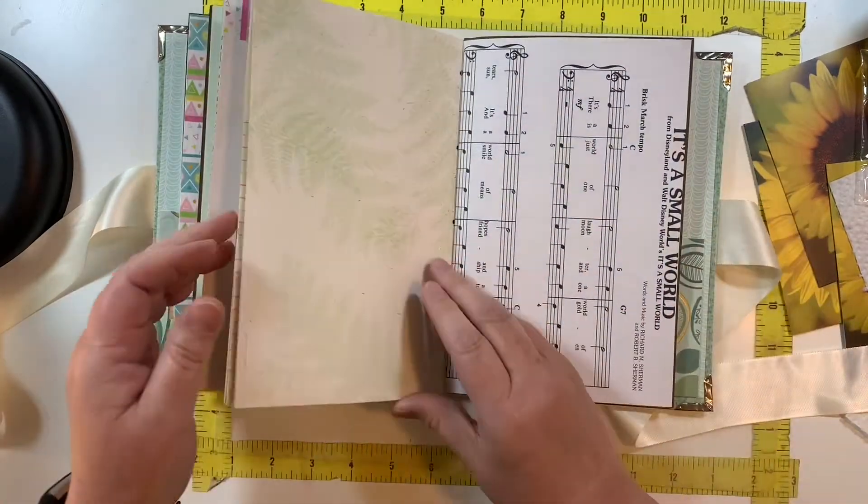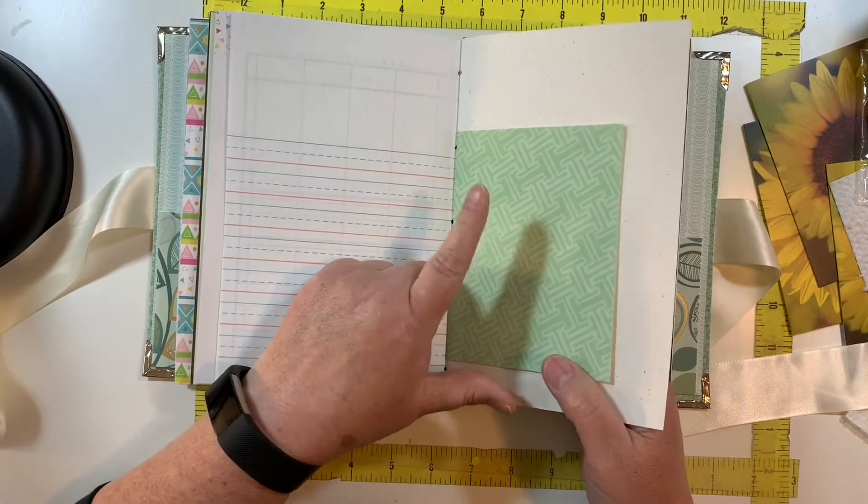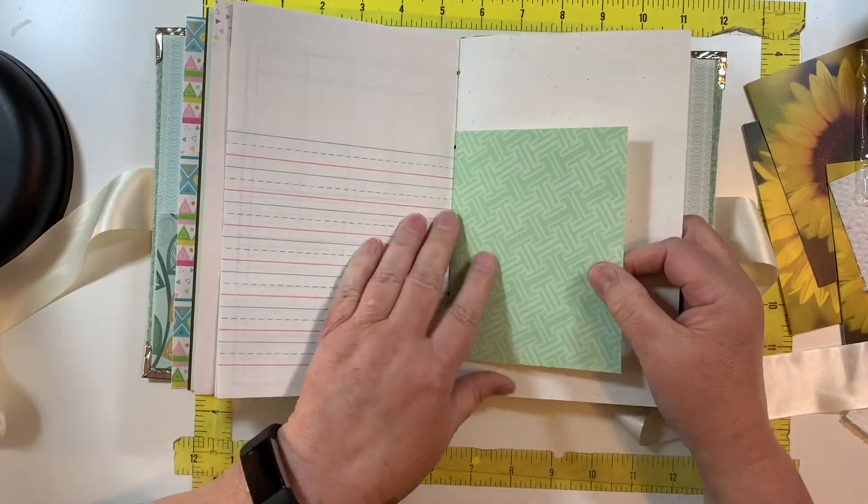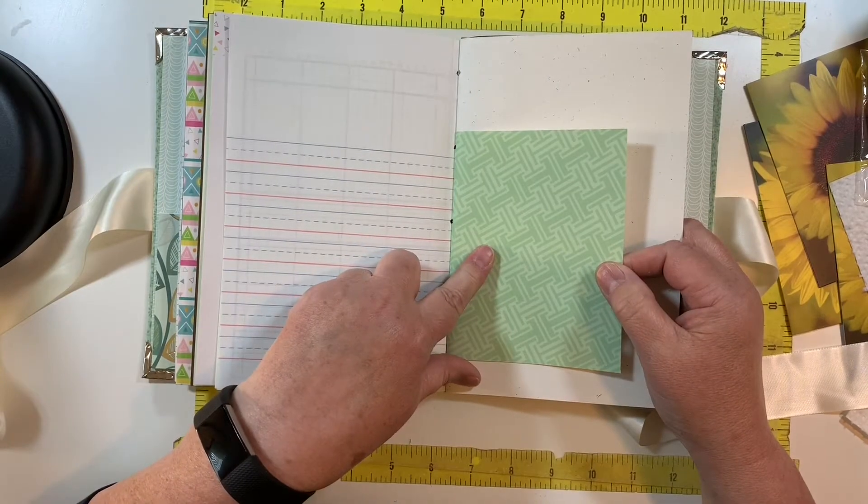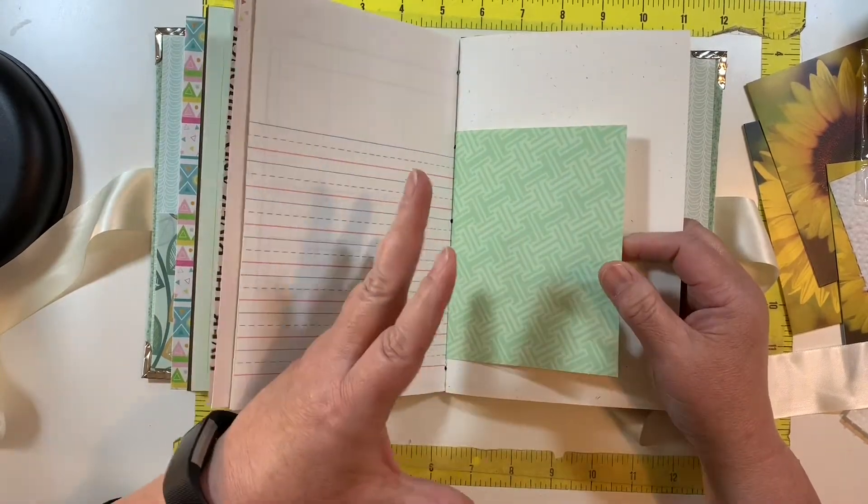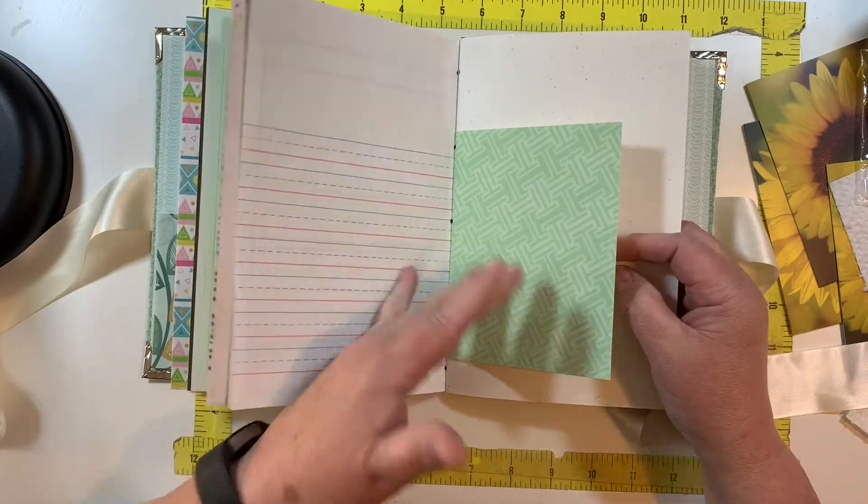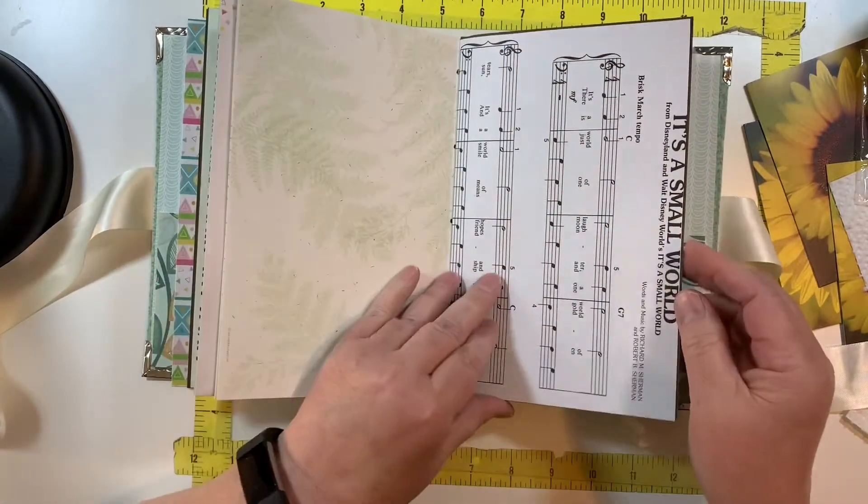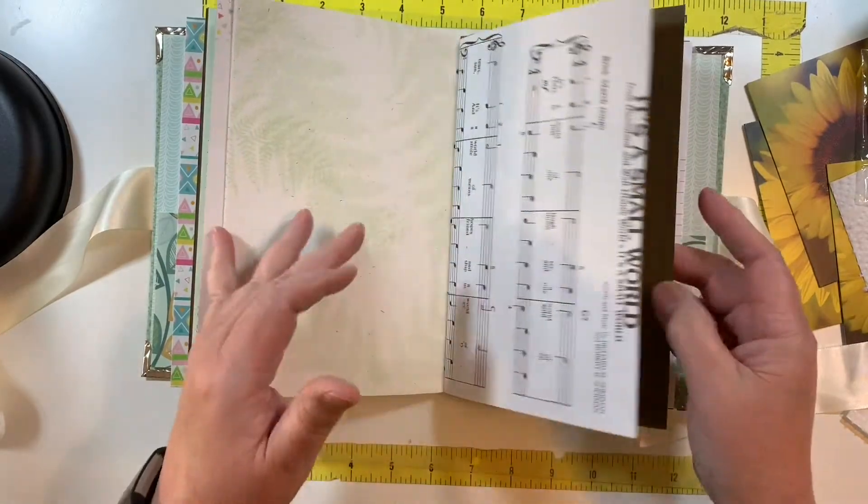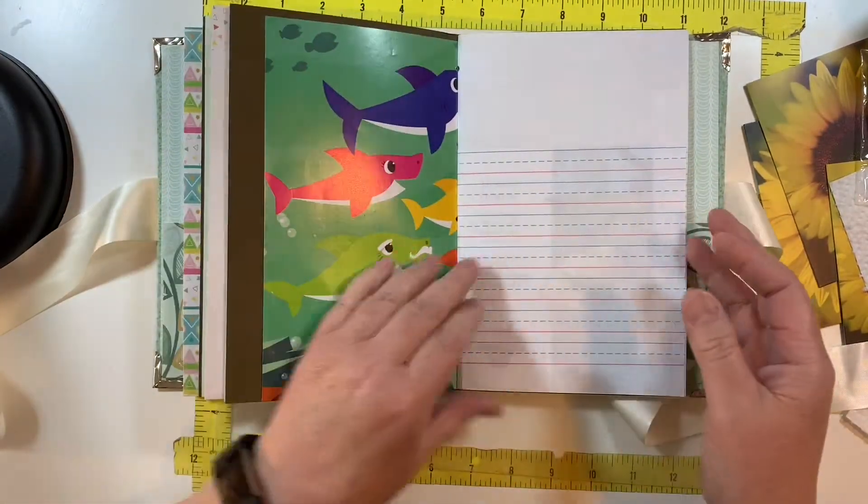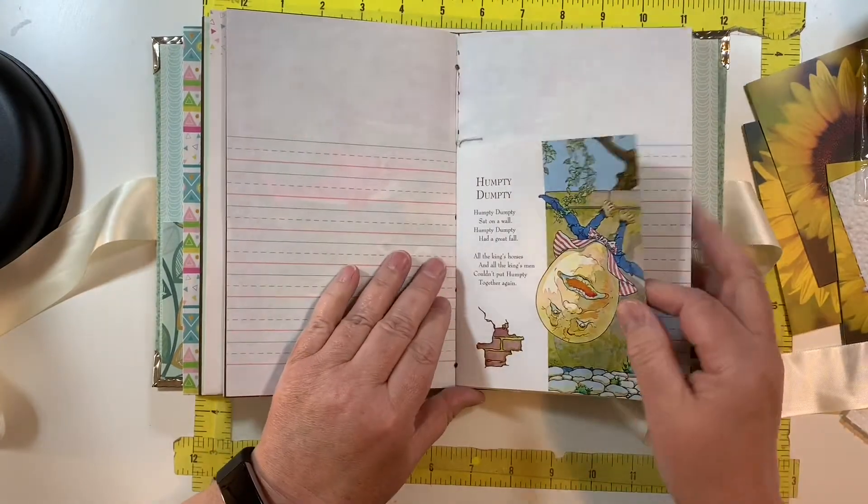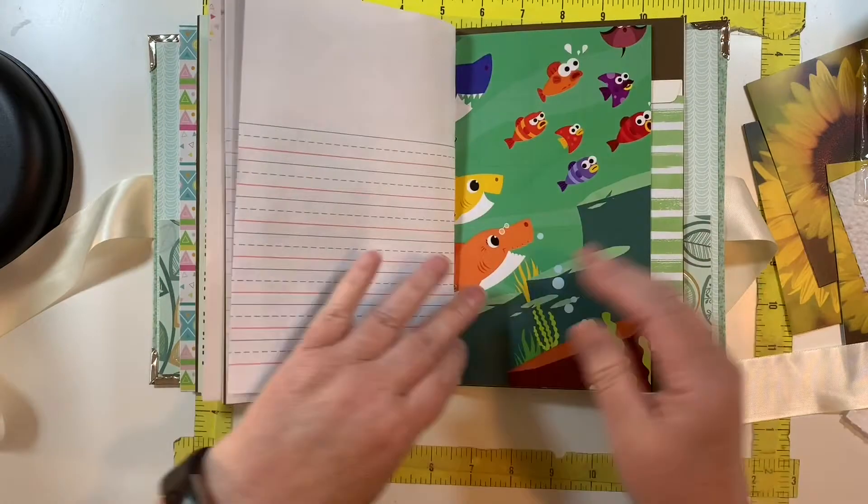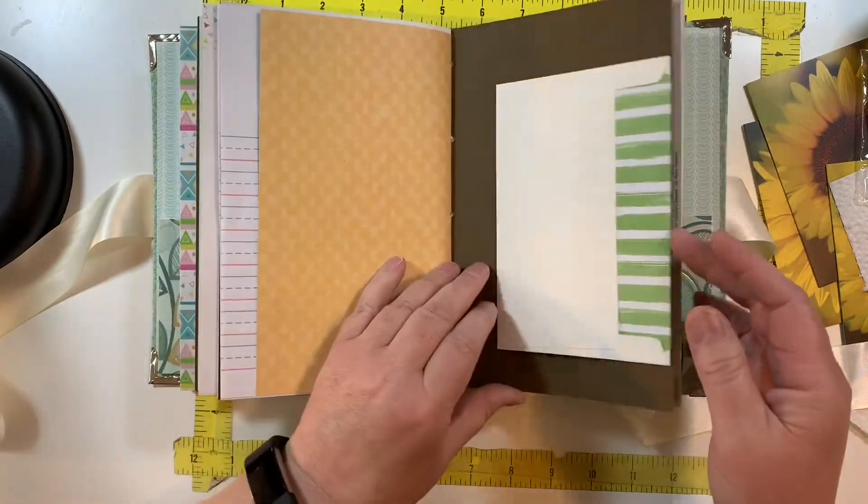These note cards are from Michael's. They're hot buys. I bought them last summer. They came like 50 in a box, I think, maybe even more, and it was buy one get two free. So it was rather inexpensive. And I like them because the backs of them, there's nothing on the backs. Whereas with the regular note cards, you have stuff on the back.